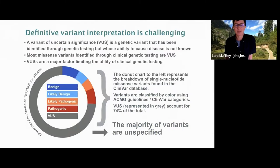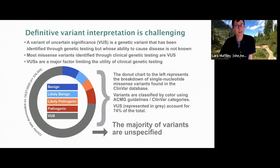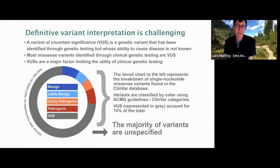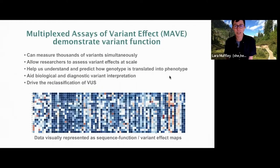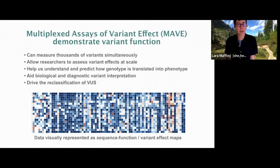As a bit of background about the problem at hand, many of you know one of the central challenges in biology is understanding how genomic variation affects genome function. You might have heard of the term variant of uncertain significance, which is a genetic variant that has been identified through genetic testing but whose ability to cause disease is not known. In order to better understand and predict how genotype is translated into phenotype, we turn to multiplexed assays of variant effect, which demonstrate variant function and allow researchers to assess variant effects at scale.